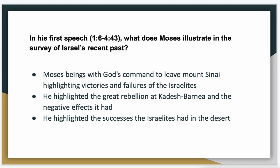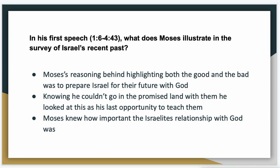This is reminding the Israelites of past successes and past failures, almost humbling them. Without these reminders, we can see a trend of the Israelites thinking that they can do things without God — much like how we think we can do things by ourselves in our lives sometimes without God. But at the end of the day, we know that we need God. Moses' reasoning behind highlighting both of these things was to prepare Israel for the future with God.